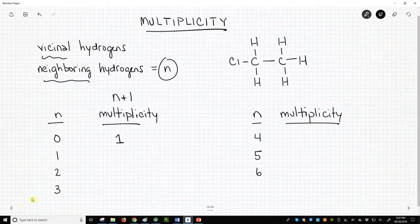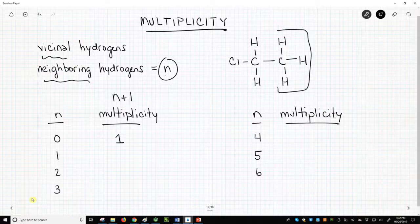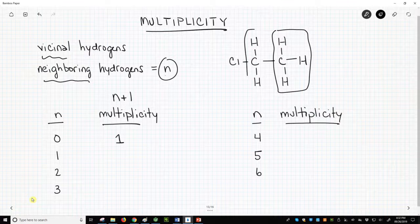We have on the screen a Lewis structure of chloroethane. Chloroethane has two different types of hydrogens: the hydrogens on the CH3 group on the right and the hydrogens on the CH2 group.